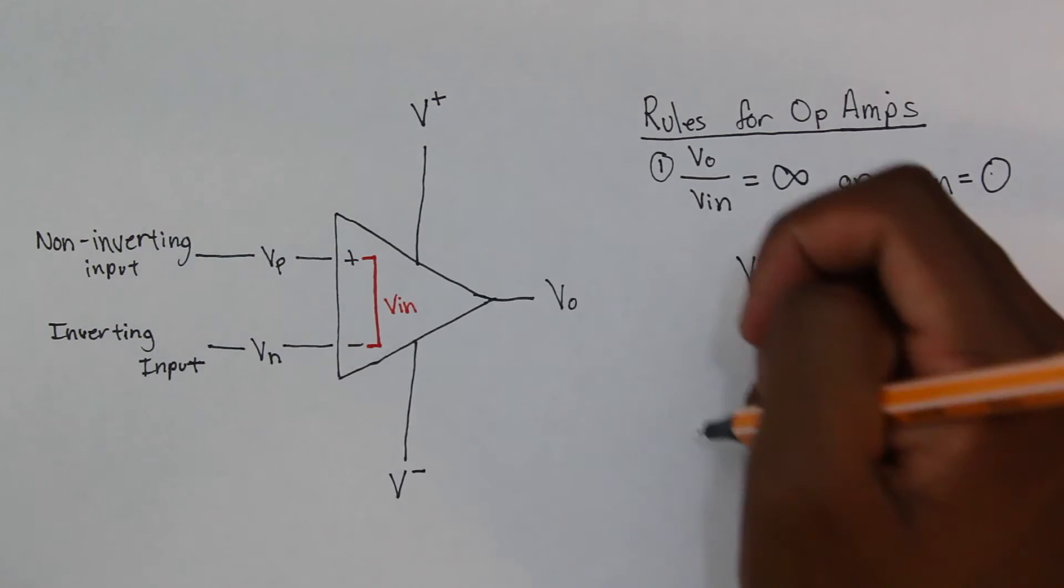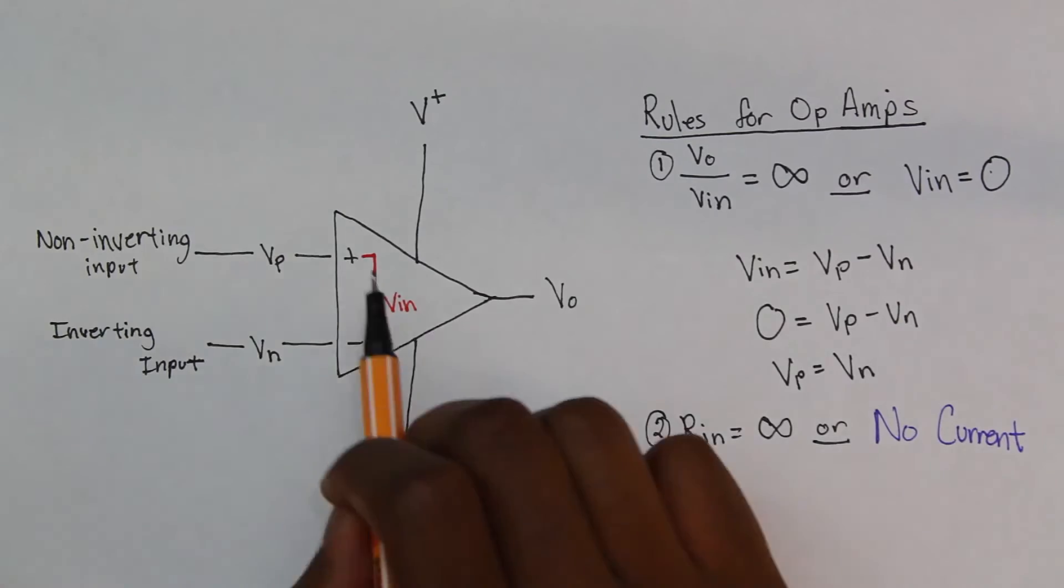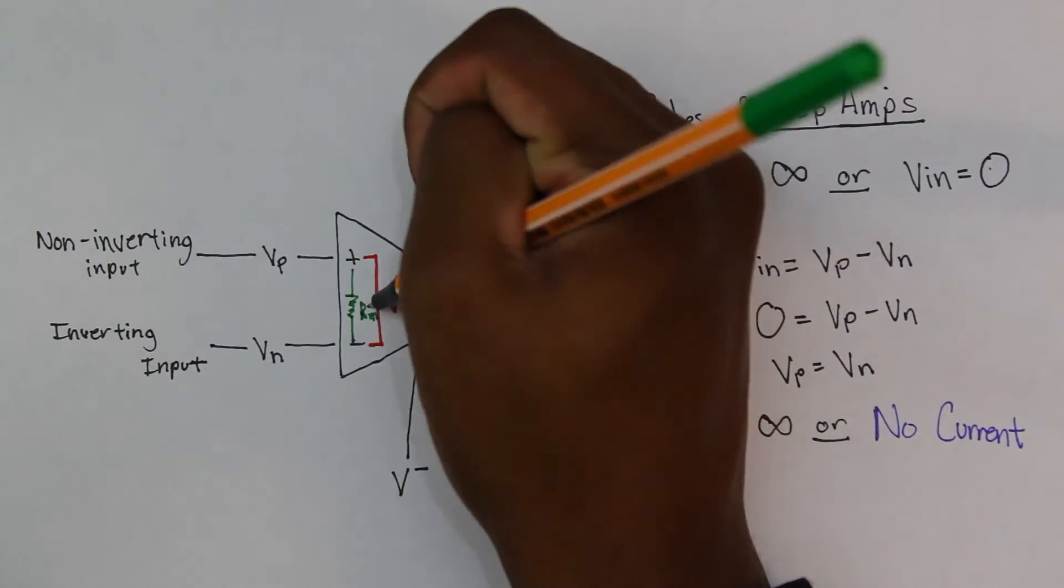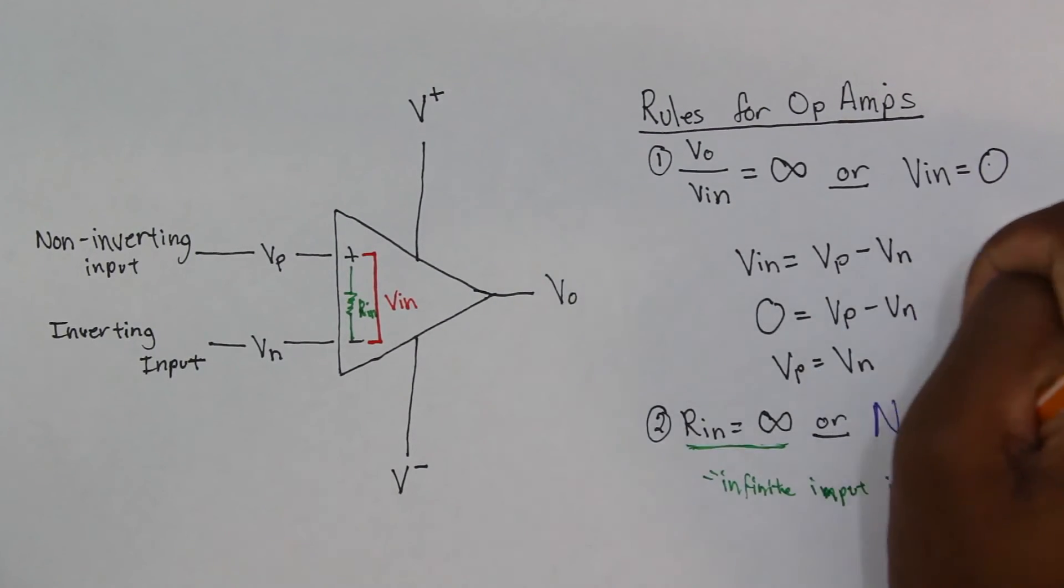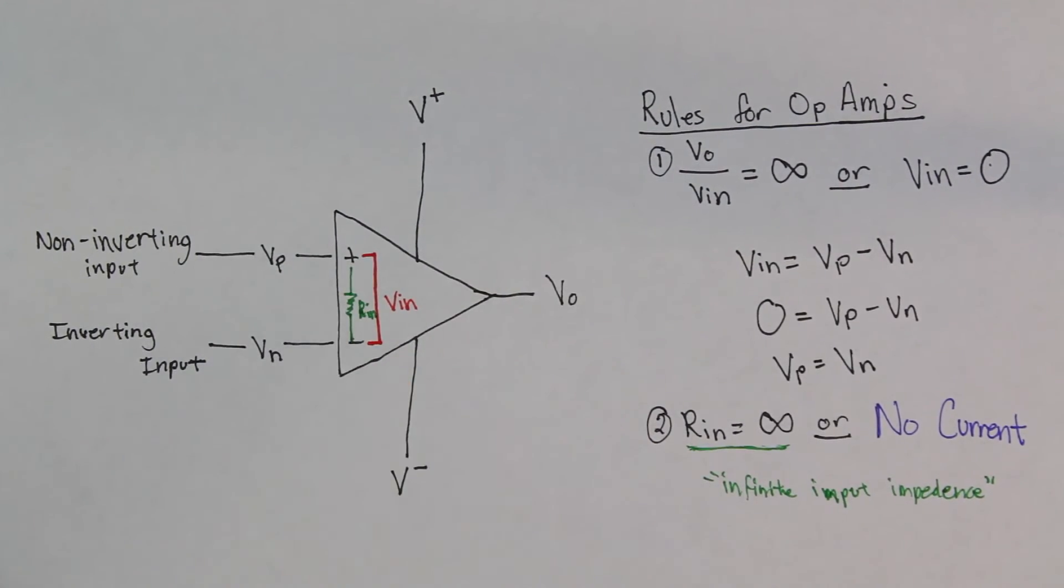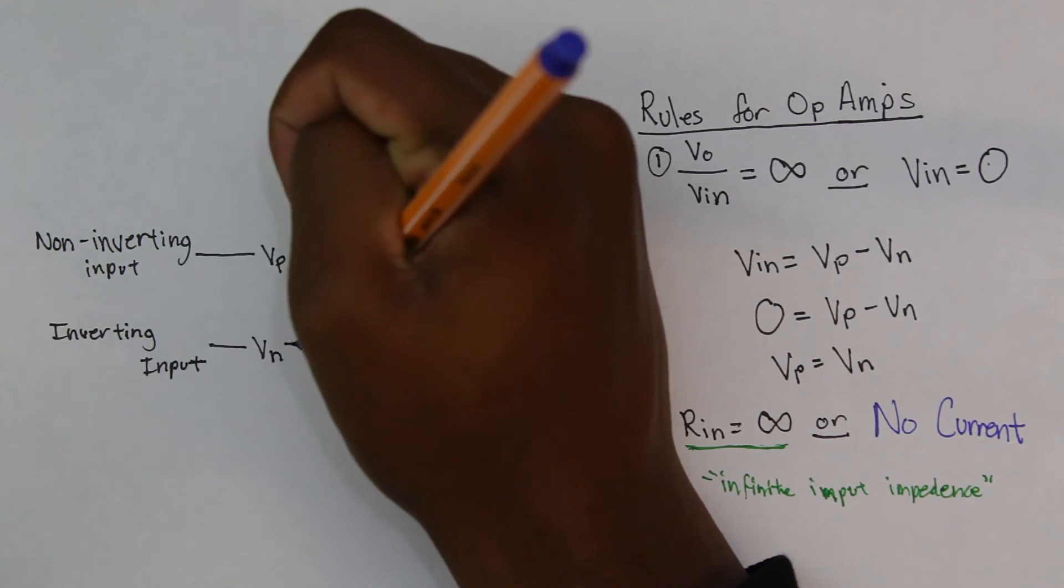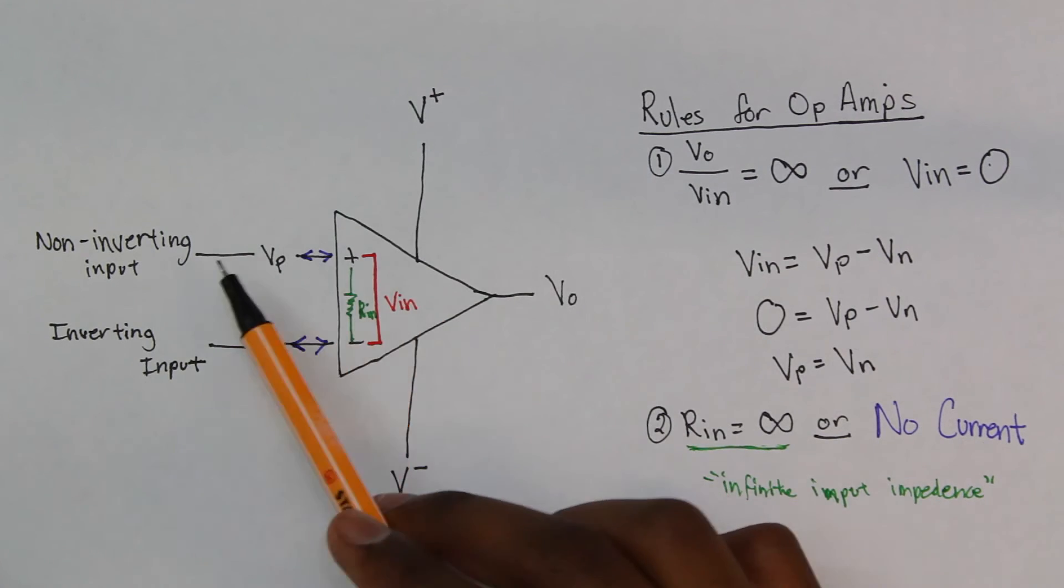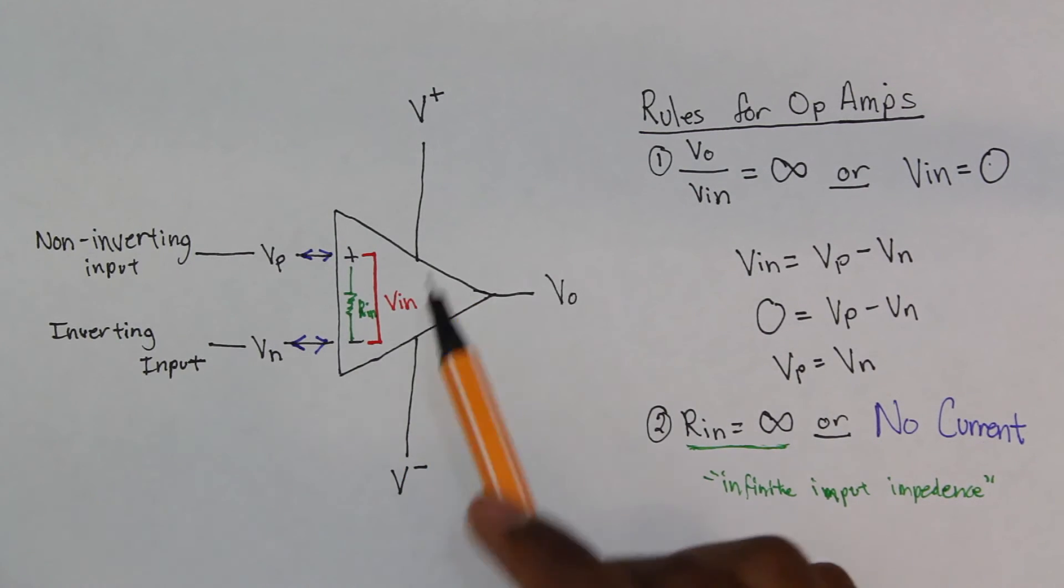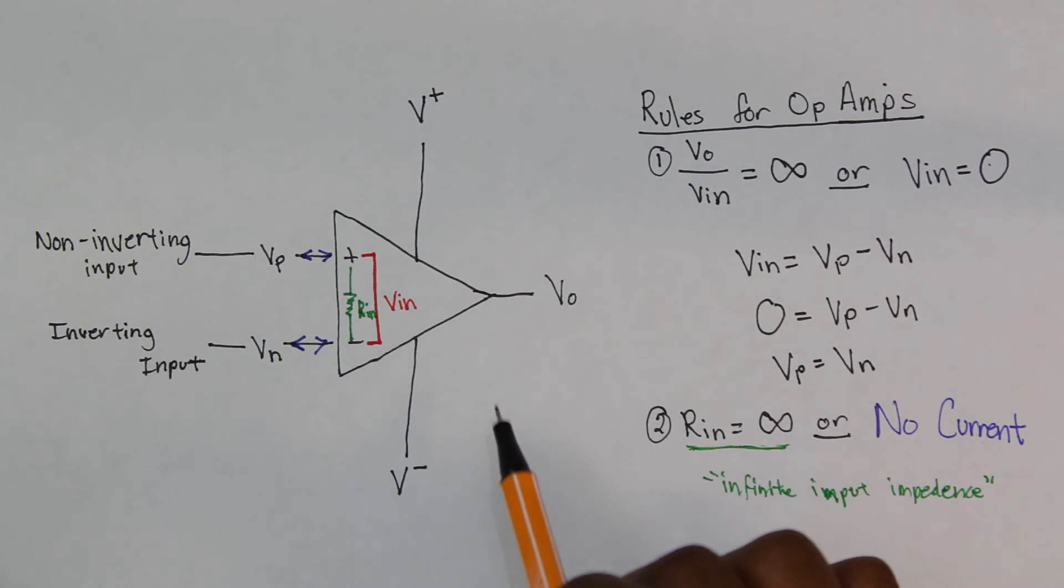Now, the second rule for an op-amp is that Rin is equal to infinity. Now, there's this resistor between Vp and Vn, and that's supposed to be equal to infinity. Now, the easiest way to make an infinite resistor is obviously an open circuit. So another way of defining this is that no current flows into Vp or flows out of Vp, and no current flows into Vn or out of Vn. And this is really special, because we want to make sure we get this down, that no current actually flows into the op-amp. That's a really important fact, that no current is ever supposed to flow into the op-amp.